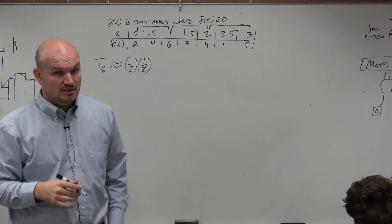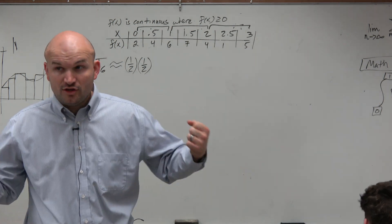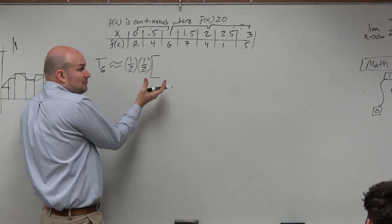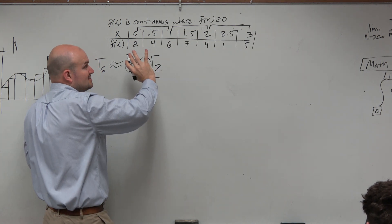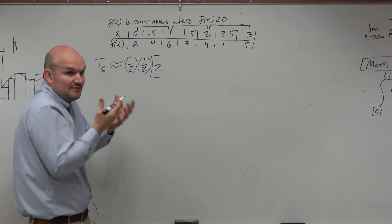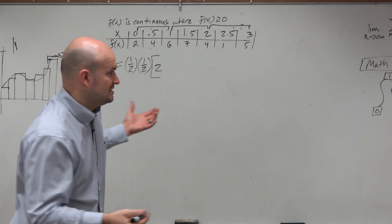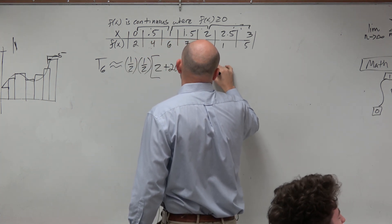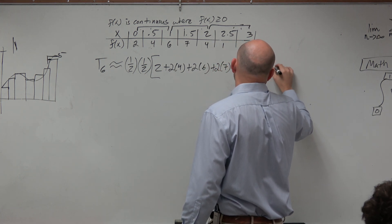Now, rather than writing out base 1 plus base 2 for all the trapezoids, remember, if you remember the rule, as long as this is uniform, it's the first height, and then it's 2 times all of these, and then it's the last one. So you guys can just quickly rewrite this as 2 times 4 plus 2 times 6 plus 2 times 7 plus 2 times 4 plus 2 times 1 plus 5.